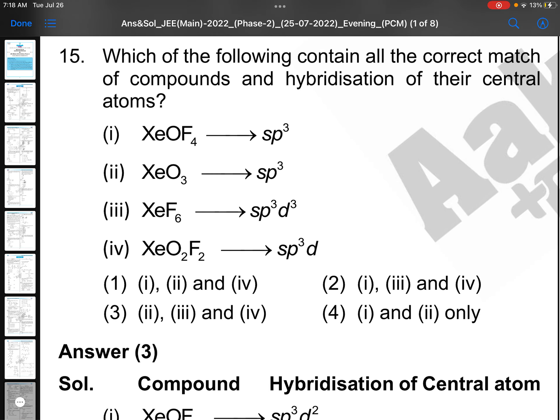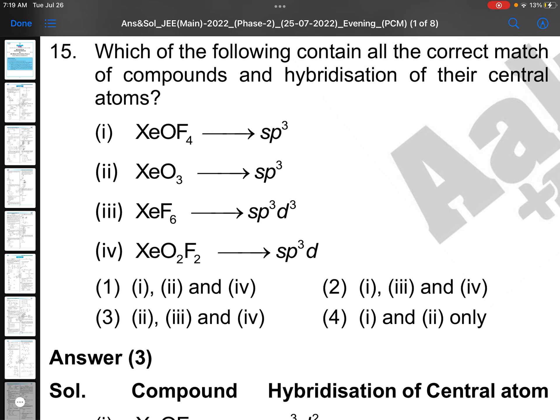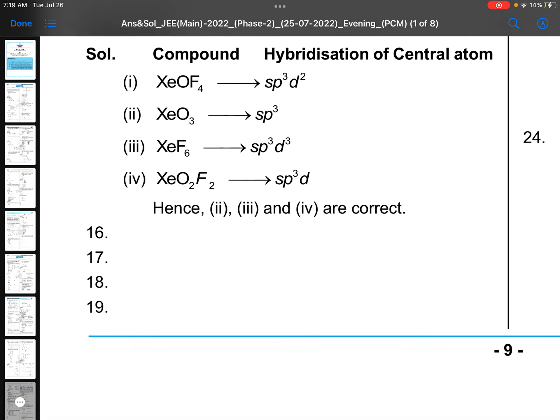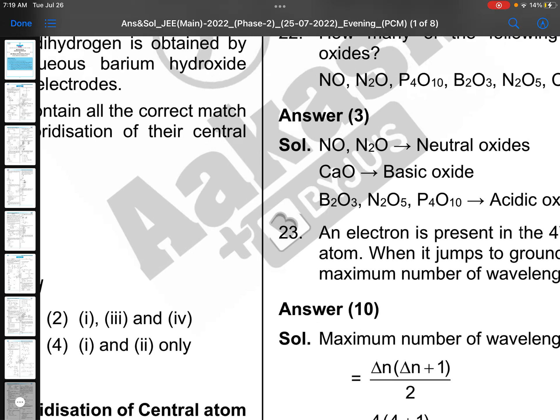Which is the following contains all the correct match of compounds? This is one simple question actually. XeOF4 is sp3d2 - this is wrong. XeO3 sp3 is correct. XeF6 is sp3d3 is right. XeO2F2 is sp3d correct. Simple hybridization concepts. You know half into central atom valency plus monovalent atoms attached. If you use that one, that will be very easy. Half into xenon valency 8, monovalent 4, 8 plus 4 by 2 that is 6. 6 means sp3d2, so first one gone. Second XeO3 will be 1 by 2 into 8, 4, 4 means sp3.